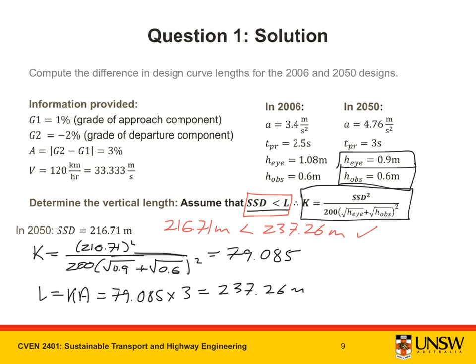And now, we also check that L is greater than 20, which is the minimum length for L. Therefore, we can use L is equal to 237.26 meters. Therefore, we have our curve length for 2050.